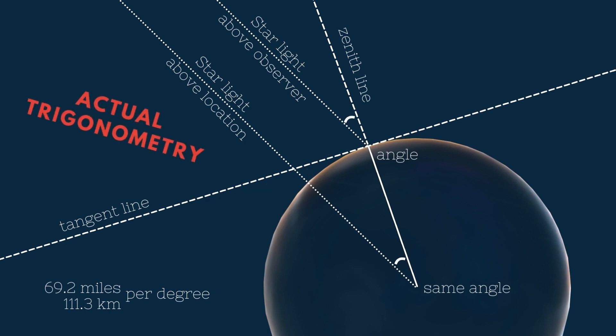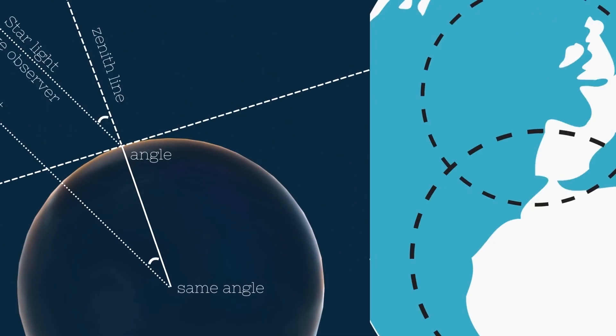So already, we have something that cannot be found on the flat earth. The method to obtain the distance from the angle we observe the star.